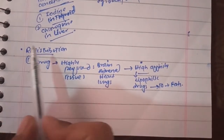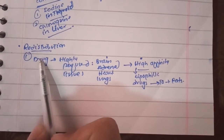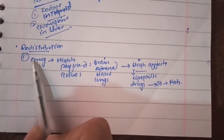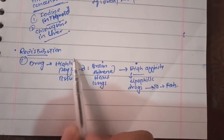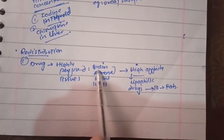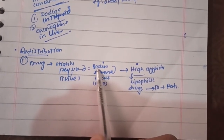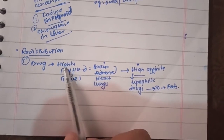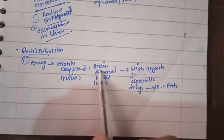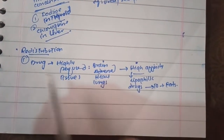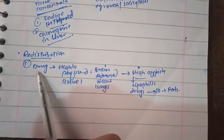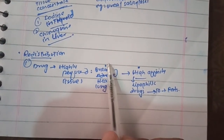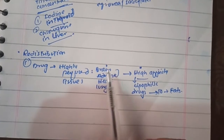In pharmacology, when a drug is given — suppose the drug is lipophilic — this drug will first be carried via blood to those tissues where blood supply is in excess. These highly perfused tissues are the brain, adrenal gland, heart, and lungs. So the drug will first reach these tissues, and when the drug becomes saturated in these tissues,